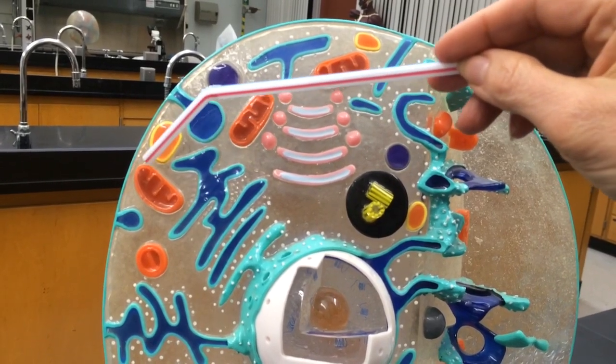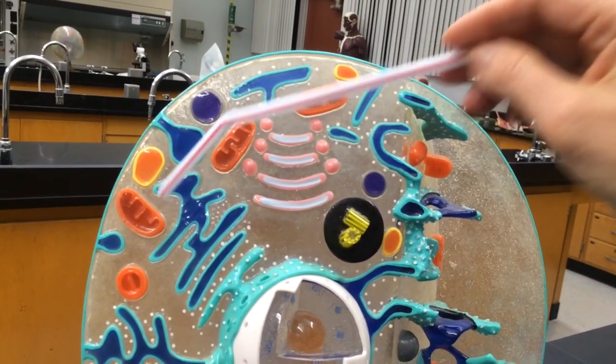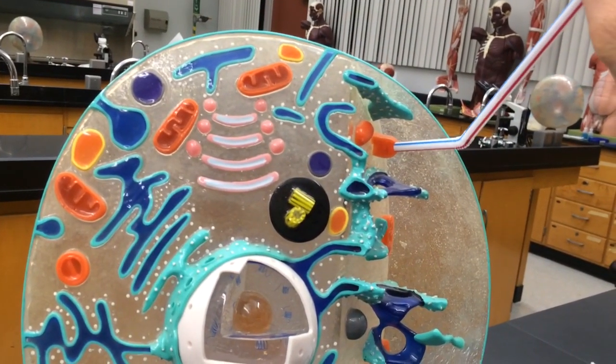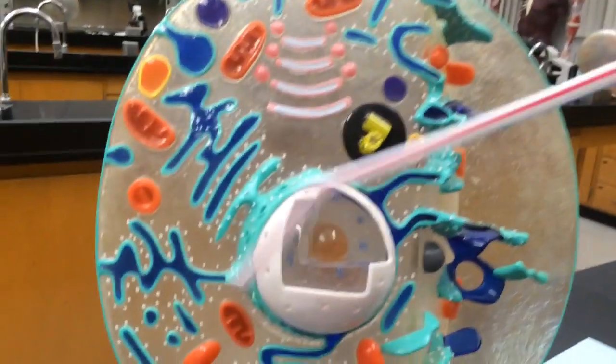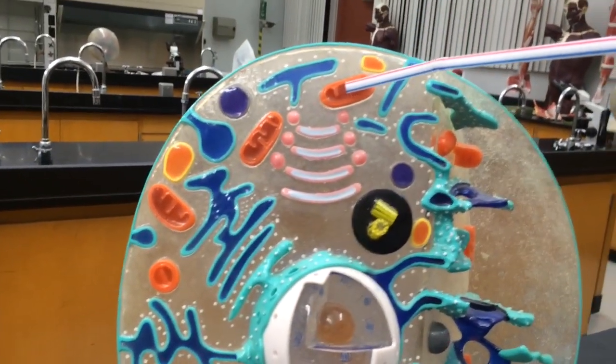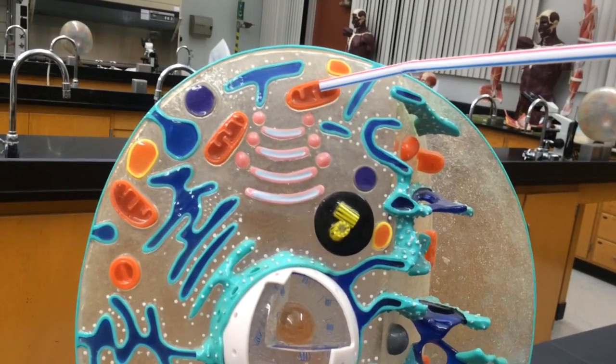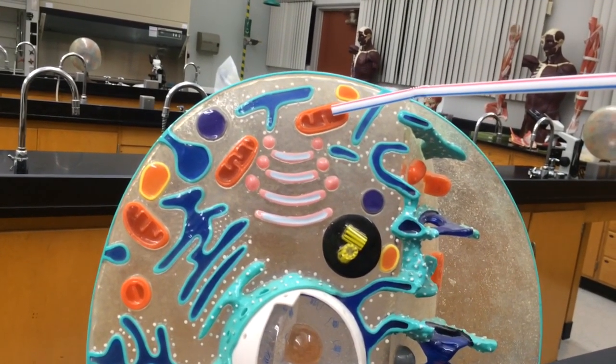Now, this organelle here is actually a very important organelle, same as this one and this one. These are mitochondria. So, here's mitochondrion, mitochondria, multiple ones. And you can see some more down here. Now, the role of mitochondria is to actually produce ATP, that's adenosine triphosphate, which is energy.